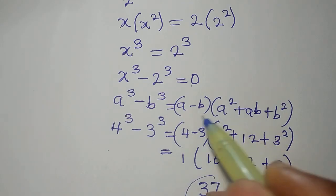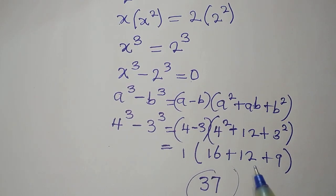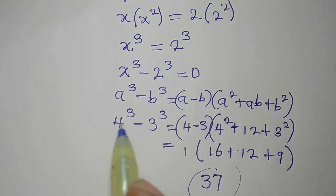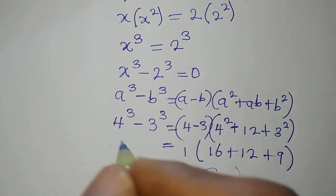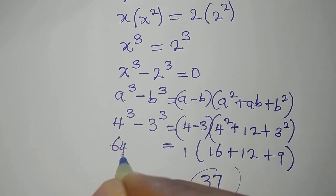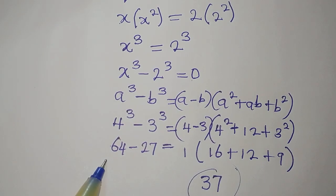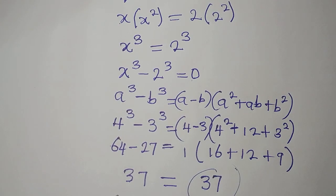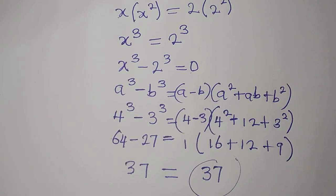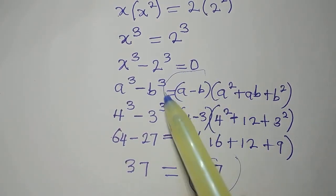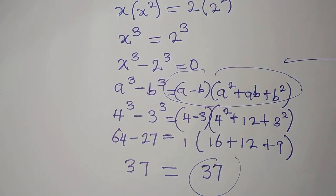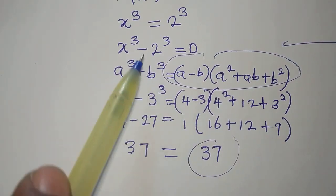Applying the formula we got 37. If we work directly, 4 to the power of 3 is 4 times 4 times 4, which is 64, minus 3 to the power of 3 which is 27. And 64 minus 27 is equally 37. You can see the left-hand side and right-hand side are equal, so this formula really works perfectly.